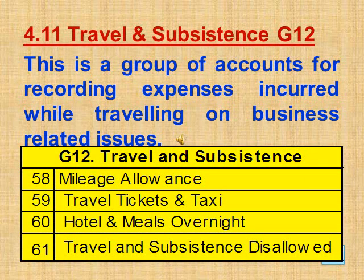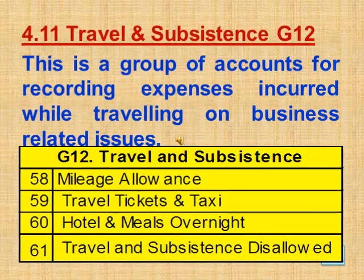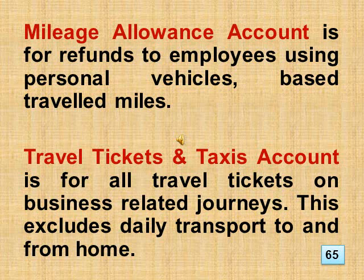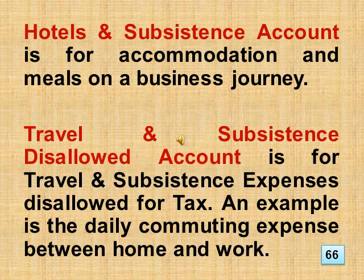Section 4.11 Travel and Subsistence, Group 12. This is a group of accounts for recording expenses incurred while traveling on business-related issues. This includes mileage allowance, travel tickets and taxi, hotel and meals overnight, plus travel and subsistence disallowed. Mileage allowance account covers refunds to employees using personal vehicles based on travel miles. Travel tickets and taxis account covers all travel tickets on business-related journeys, excluding daily transport to and from home. Hotels and subsistence account covers accommodation and meals on a business journey. Travel and subsistence disallowed account covers travel and subsistence expenses disallowed for tax — an example is the daily commuting expense between home and work.